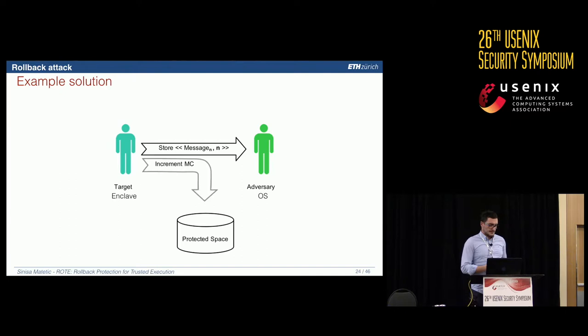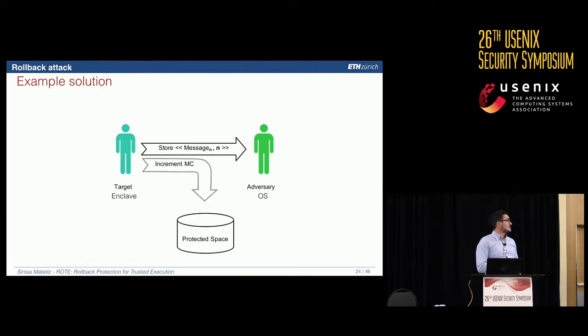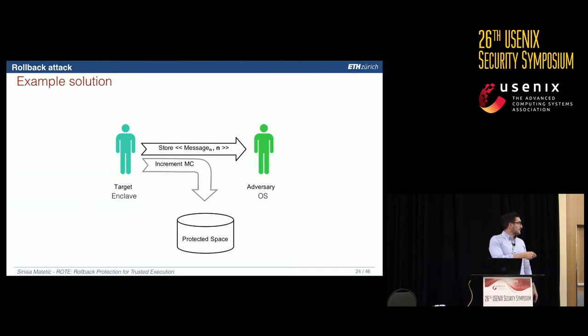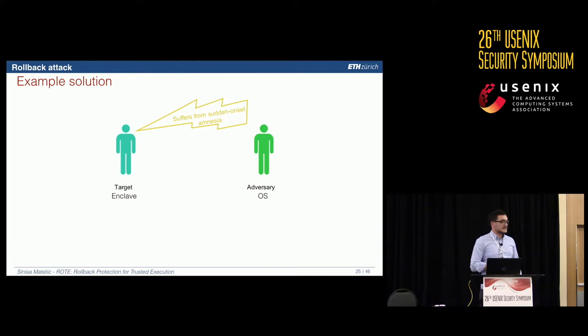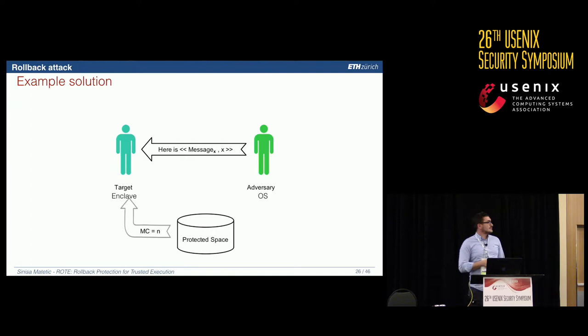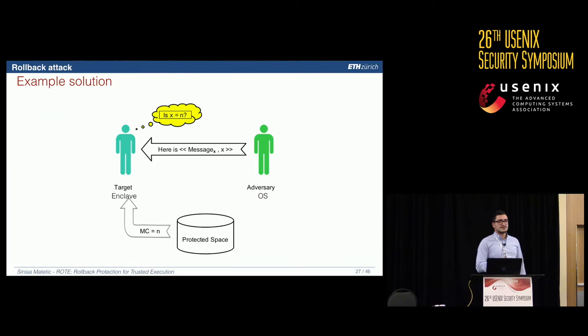How can we solve the rollback problem? When an enclave stores message N, it also stores a monotonically increasing counter value — not only in the OS but in some abstracted protected space in the cloud. If we suffer from the same amnesia, the enclave asks the OS for the latest message and separately queries the protected space for the latest counter. The enclave then verifies: is the returned counter X equal to N? If yes, it securely loads the state; if not, it discards it.